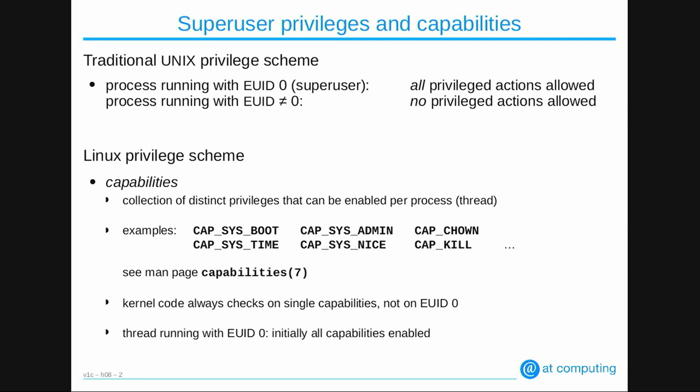You can kill any process — not only processes running under your ID, but any process if you have the cap_kill privilege. Sysadmin means that if you have that privilege, you can mount or unmount file systems — that kind of general system administrator things. You can see a full list of these capabilities by looking at the capabilities man page, where every capability is listed with what you can do if you have it.